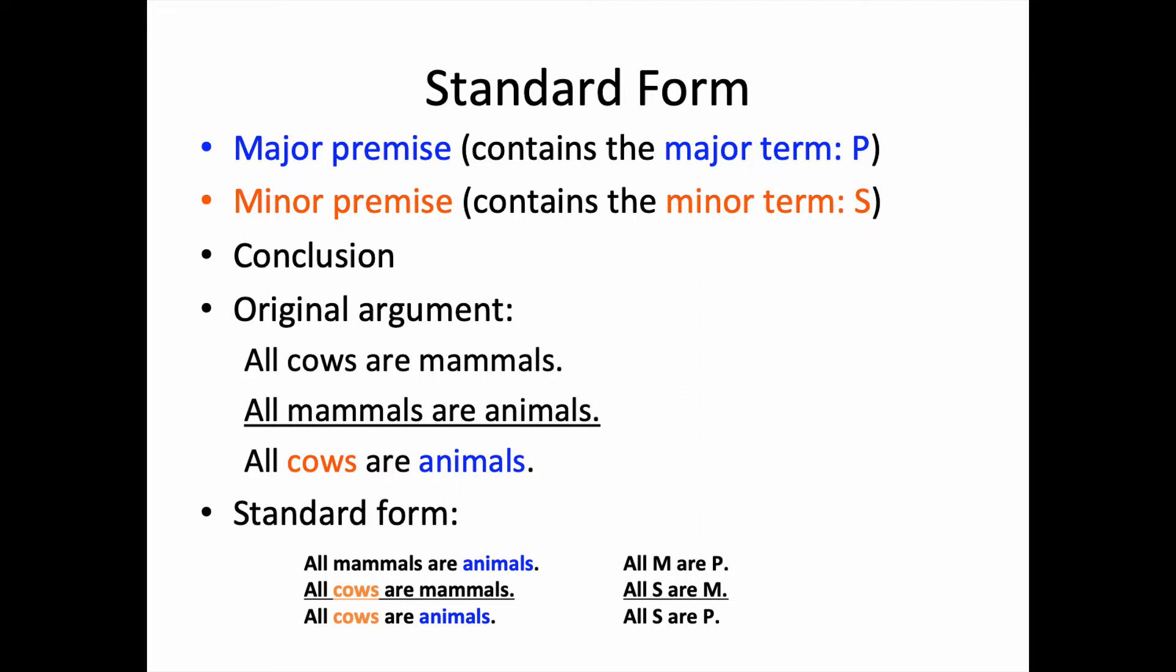Another way to organize this argument in standard form, as I mentioned just a moment ago, is in terms of the symbolization M, P, and S for middle term, major term, and minor term. Check out the explainer that answers the question, what is a categorical syllogism, for a more detailed account of these technical elements.